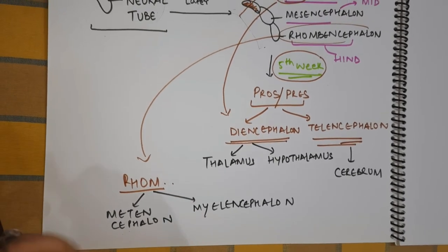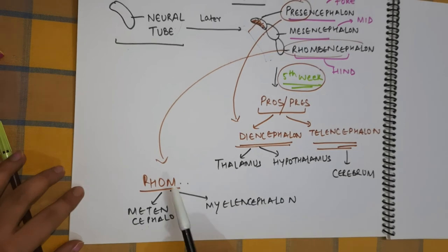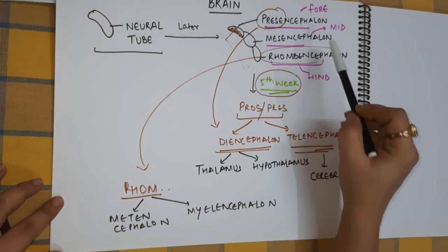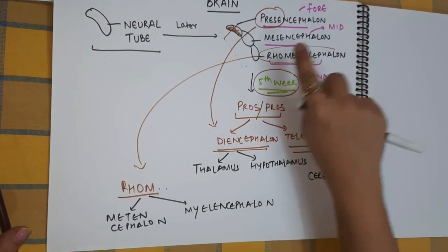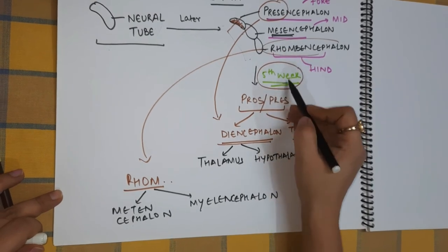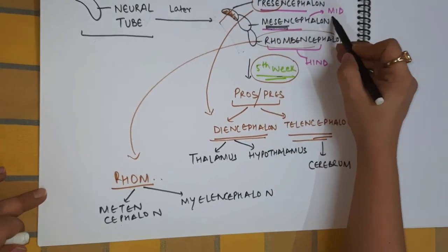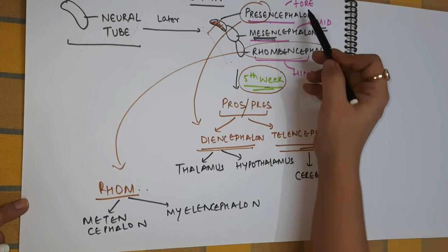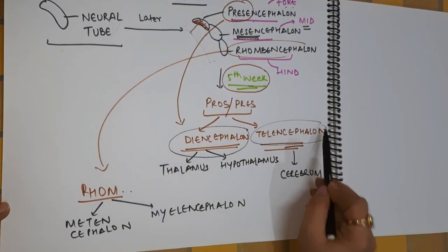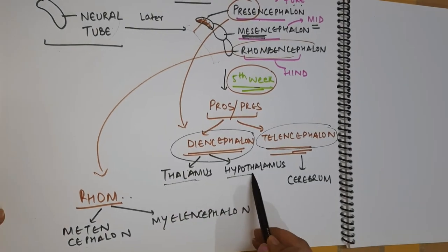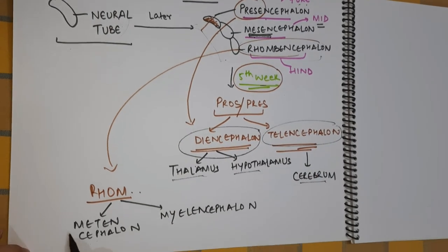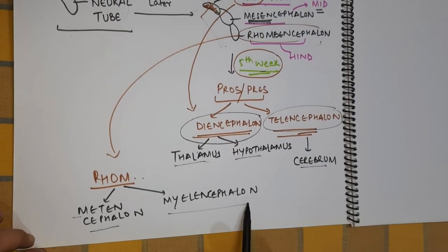So when we talk about a fully grown human brain, we talk about three things: prosencephalon, mesencephalon, and rhombencephalon. The mesencephalon stays the same — it remains undivided and is still called the midbrain. The prosencephalon, or forebrain, is divided into diencephalon and telencephalon, which further divide into thalamus, hypothalamus, and cerebrum. And the rhombencephalon is further classified into metencephalon and myelencephalon.